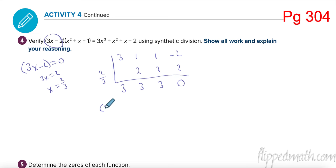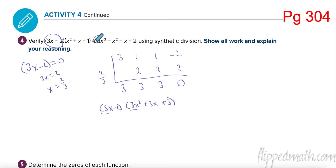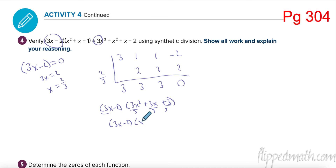So we had 3x minus 2 times 3x squared plus 3x plus 3. But we know that's wrong because 3 times 3 is 9 and I need mine to say 3. That's where we go back — I have an extra factor of 3 from the fraction, so I divide the quotient by 3, giving x squared plus x plus 1. That verifies it does work out.